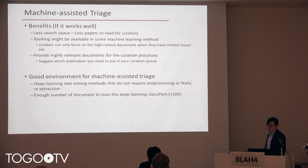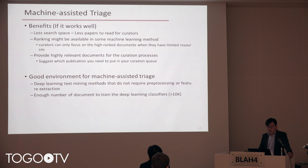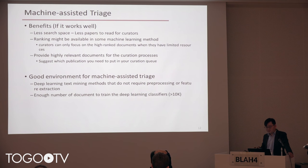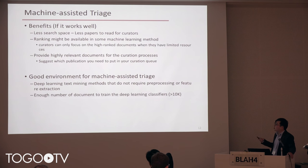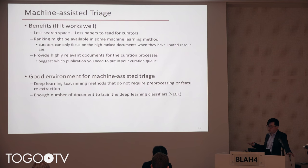So we suggest machine-assisted triage. The benefit, if it works well, is less search space — meaning fewer papers for curators to read — and ranking may be available with some machine learning methods. It's a big benefit for curators to focus only on highly ranked documents when they have limited resources, and compared to query-based triage, we can provide more highly relevant documents for the curation process.